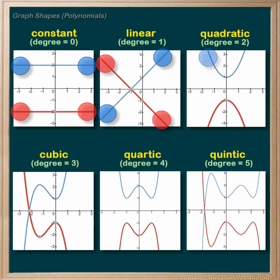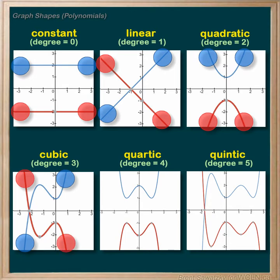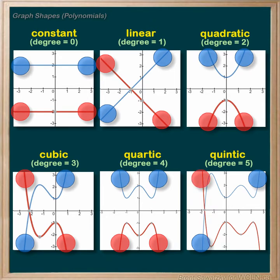For degree two, the quadratic, the positive starts in the top left and ends in the top right. The negative starts in the bottom left and ends in the bottom right. For a degree of four, the positive starts in the top left and ends in the top right, and the negative starts in the bottom left and ends in the bottom right. For a degree of five, the positive starts in the bottom left and ends in the top right, and the negative, again opposite, starts in the top left and ends in the bottom right.